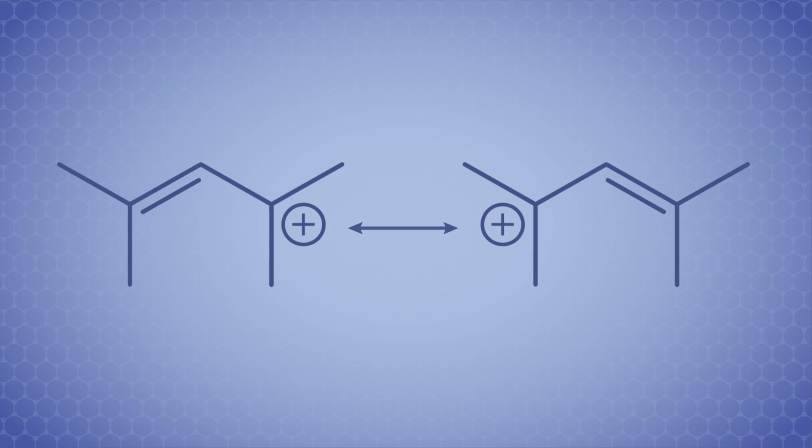Let's see if we can move between these structures with arrow pushing. We always begin our arrows on electrons, so I'll start my arrow on the double bond. This moves the electrons away from that carbon and gives it a formal positive one charge, and we've done it!